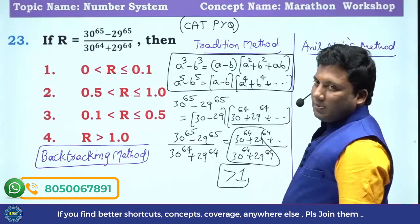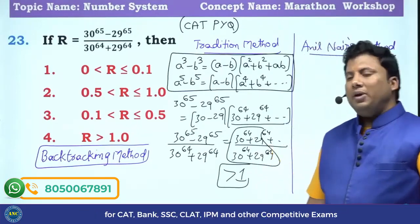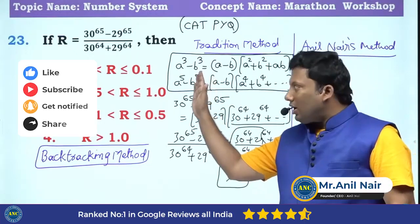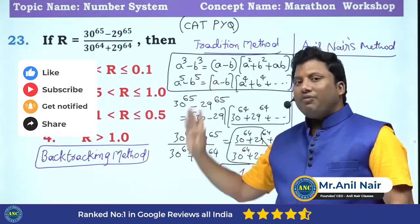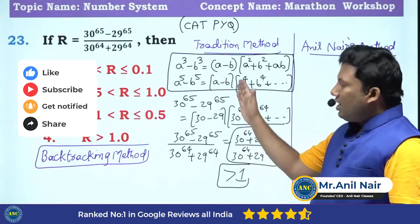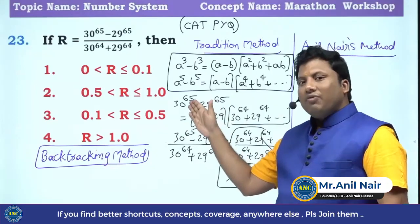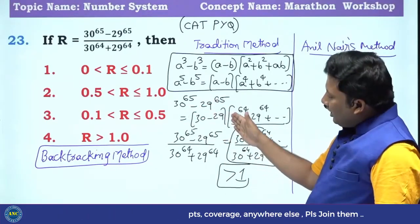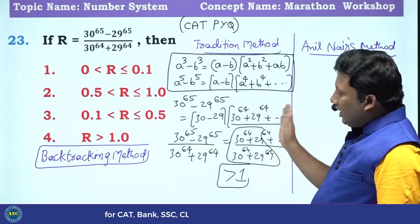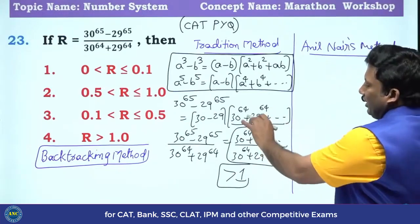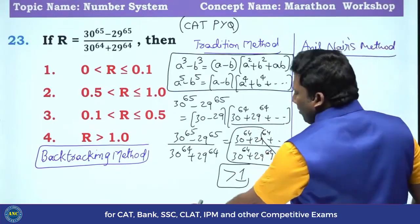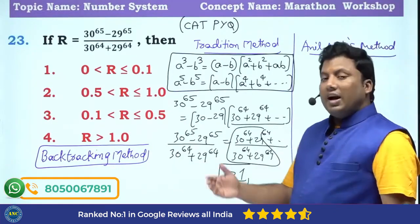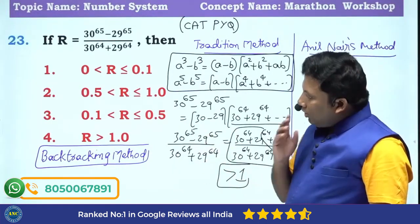A cube minus B cube is A minus B into A square plus B square plus AB. When the power is odd, A power 5 minus B power 5 is A minus B into something. So 30 power 65 minus 29 power 65 equals 30 minus 29 into something. If I divide, these cancel, giving 1 plus something positive, which is greater than 1.